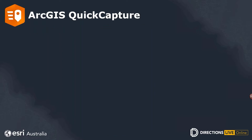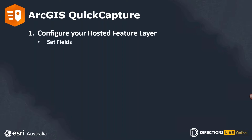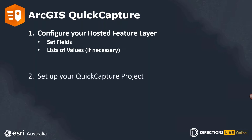Now we'll move on to Quick Capture. The setup for ArcGIS Quick Capture is similar to that of Field Maps; however, you do not need to configure a web map — only a hosted feature layer. For this setup, you create a new layer, set your fields and create lists of values if necessary, then import the layer into your Quick Capture project and customize the layout and buttons interface. It's a more streamlined and simple process than setting up Field Maps.